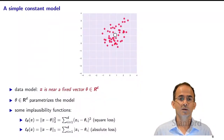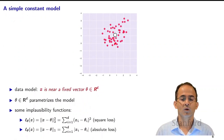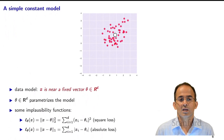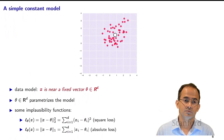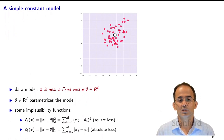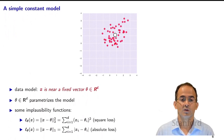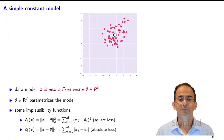The simplest example: suppose our data model is that X is near a fixed vector theta. The model is parameterized by theta, which we learn from data. Associated implausibility functions include the square loss — the squared 2-norm of X minus theta — or the 1-norm of X minus theta, which is the sum of absolute values of X_i minus theta_i.